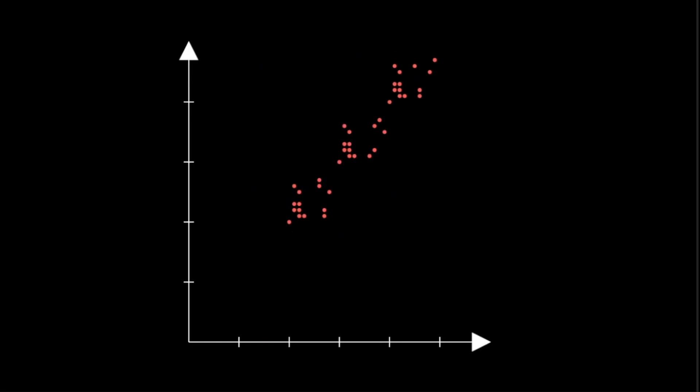However, if you have a data set which contains two dimensions, for example, if you have a data set of students in a class with weight in the x direction and height in the y direction, and each point here denotes an individual student.